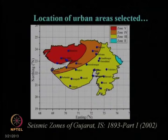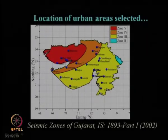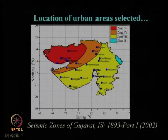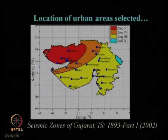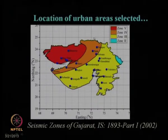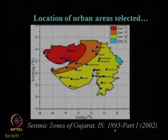This is the seismic zonation map of Gujarat state as per Indian seismic design code IS 1893 Part 1 of 2002. The four color codes — red, orange, yellow, and blue — represent zones 5, 4, 3, and 2 respectively. Zone 5 is the most vulnerable, while zone 2 is least vulnerable. Gujarat is the only state in India having all four zones as per IS 1893 Part 1.